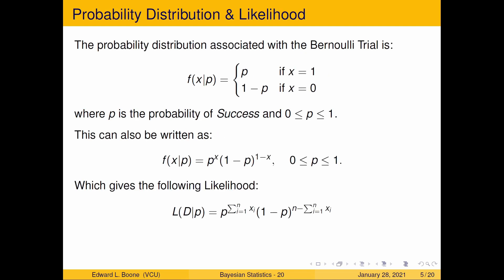We talked about the probability distribution where p is a parameter, and it's the probability of success, and we can also rewrite our probability distribution like this here. Very different than the way it's written up here, but it is equivalent because x is only one and zero. Play with it, and it works out.